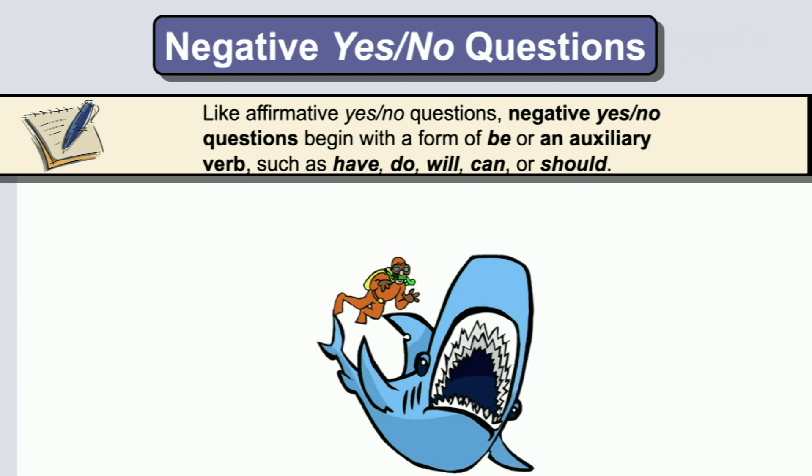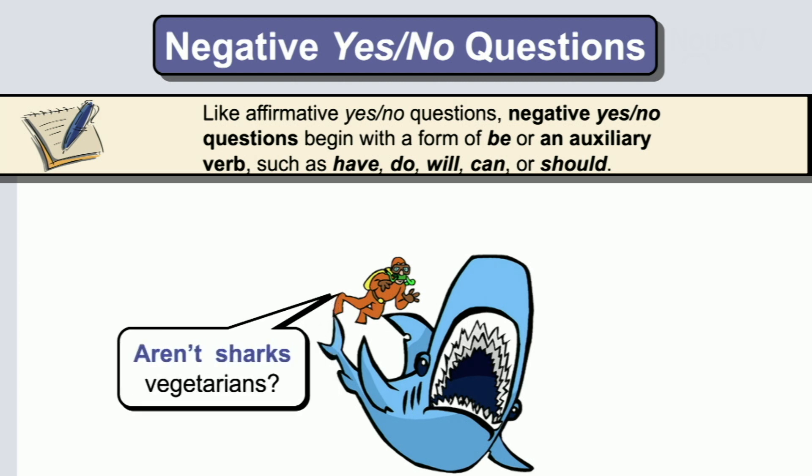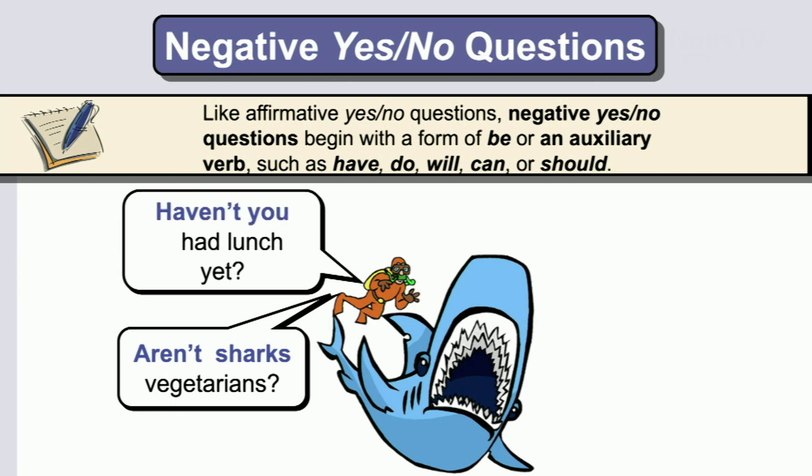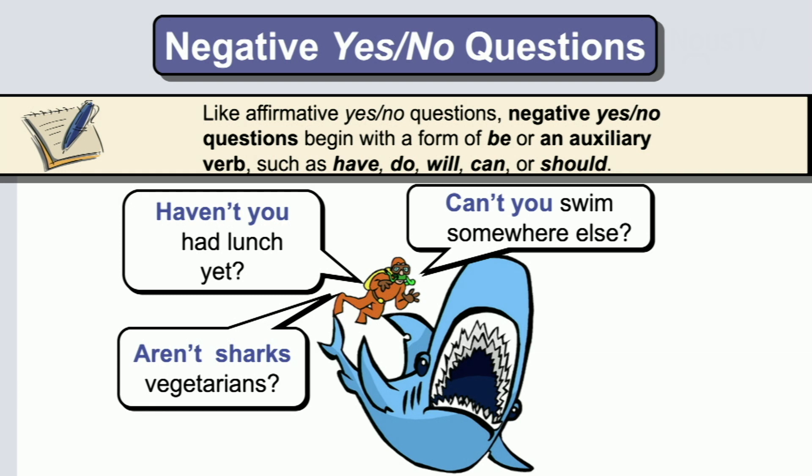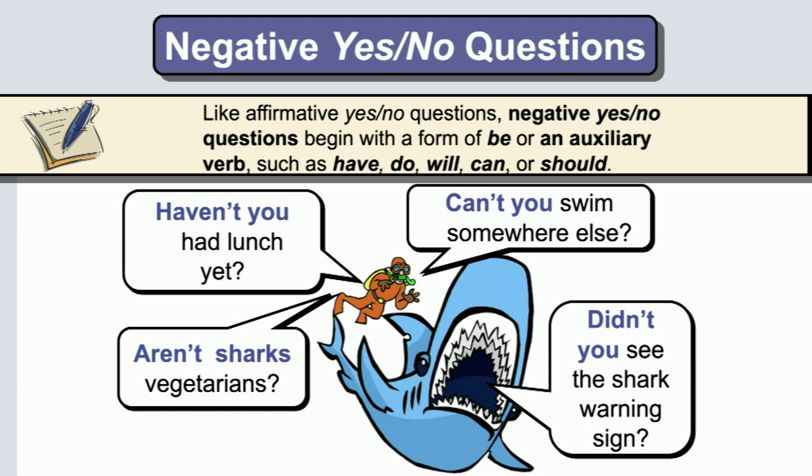Negative yes-no questions — like affirmative yes-no questions, negative yes-no questions begin with a form of be or an auxiliary verb such as have, do, will, can, or should. Aren't sharks vegetarians? Haven't you had lunch yet? Can't you swim somewhere else? These are all negative questions, and notice they're using auxiliaries like haven't, can't, or aren't. Didn't you see the shark warning sign?